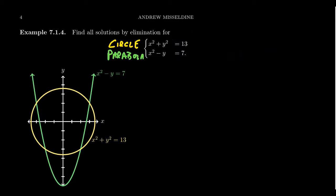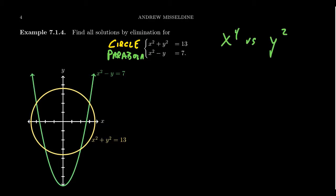Because notice: if we eliminate the x² terms, we'll be left with a y², a y, and some constants — that's a quadratic equation. Given the choice between x⁴ and y², the quadratic is the way to go.